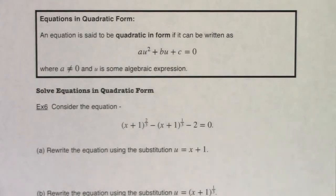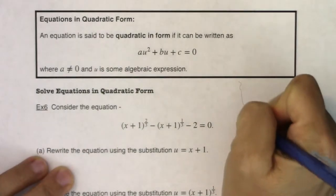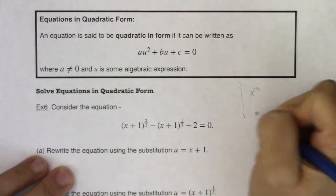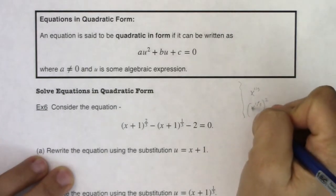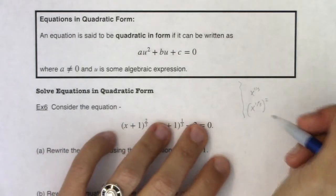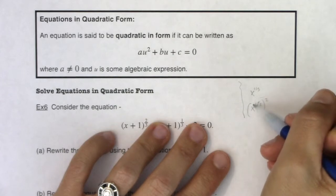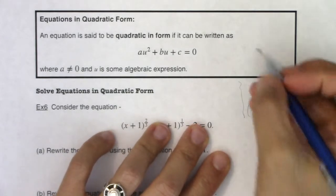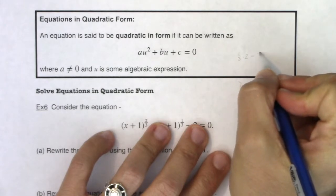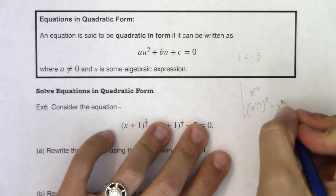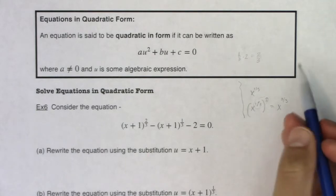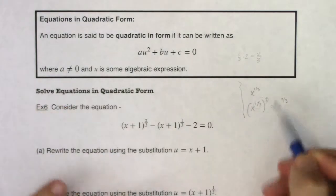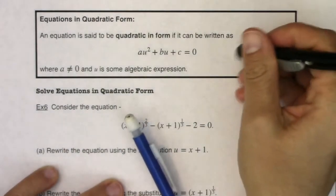Before we go into this, I'm going to do a little side problem because it's going to play a role here. I want you to think about x to the one-third, and then x to the one-third squared. We talked about this at the very beginning of the section: when you have a power raised to a power, you multiply the exponents. So one-third times two gives the fraction two-thirds. When I square x to the one-third, I'm at x to the two-thirds. Keep that in mind because that idea is going to play out when we do these equations in quadratic form.